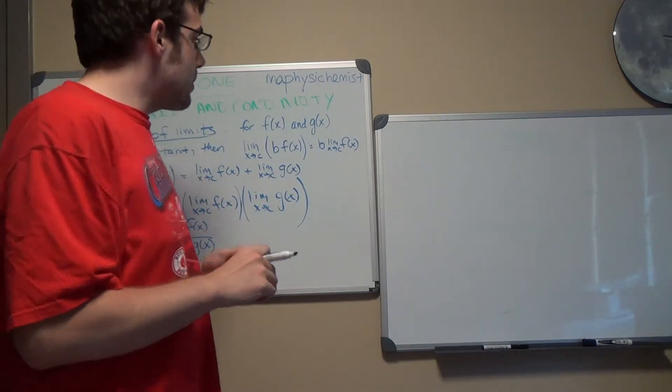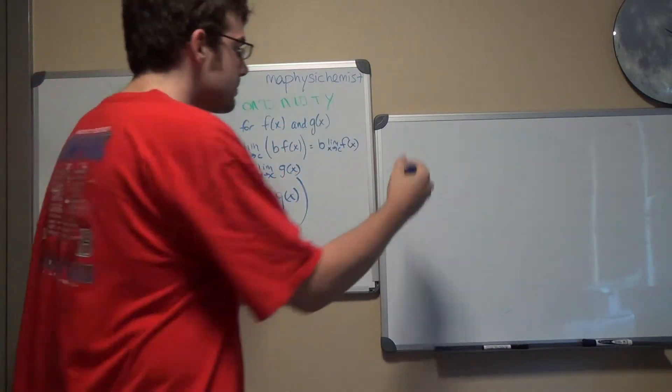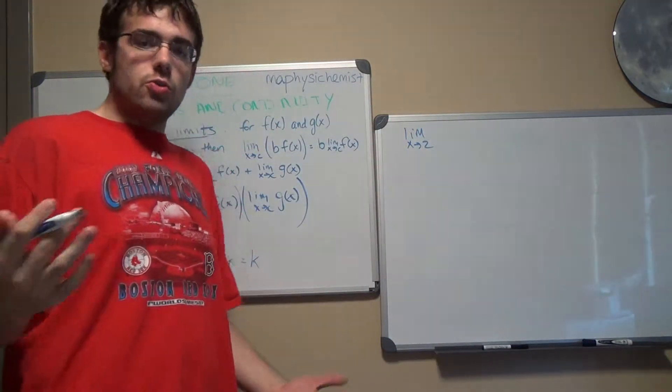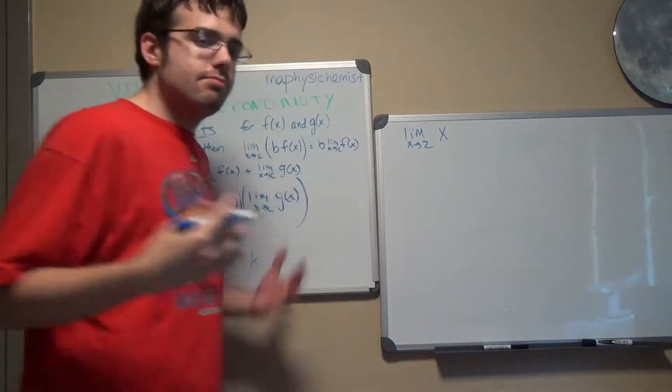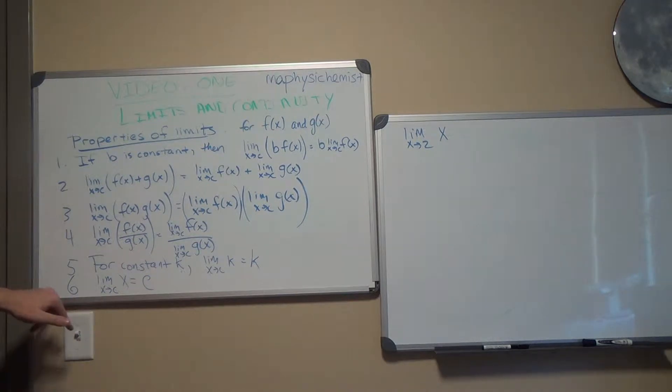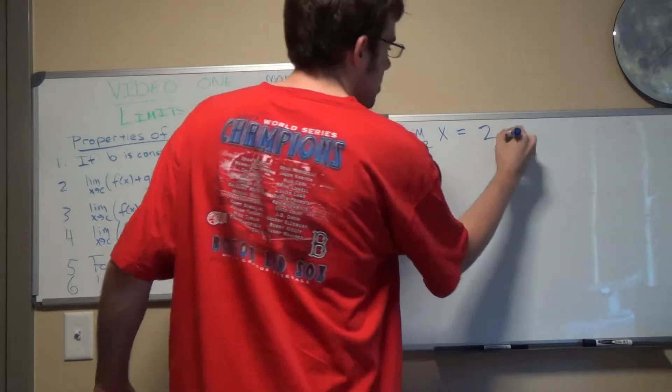So the first example that I'm going to be doing is the very simple limit as x approaches 2 of x. Let's do something simple like that for now. So I'll be using property 6, is 2.